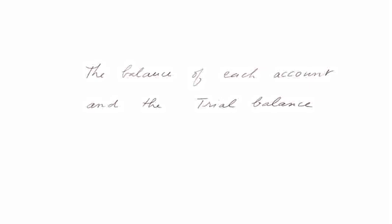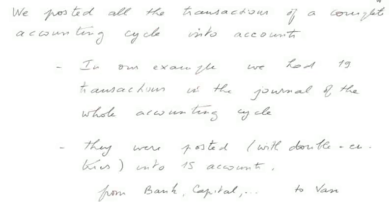The balance of each account and the trial balance. We posted all the transactions of a complete accounting cycle into accounts. In our example, we had 19 transactions in the journal of the whole accounting cycle, and they were posted with double entries into 15 accounts — from bank, capital, and so on, up to van.